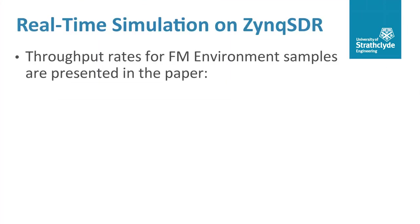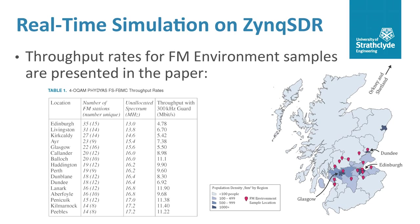The radio was able to achieve a physical layer throughput rate of 5.5 megabits per second in the FM environment for Glasgow, the largest city in the country. In rural areas, where fewer stations were broadcast, throughput rates of 11.9 megabits per second were possible. While these rates would not be sufficient to stream 4K video, they would be more than enough for an IoT application.